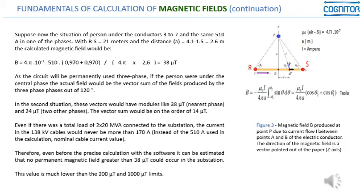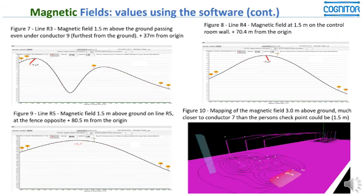Even if there was a total load of 2 times 20 MVA connected to the station, the current in the 138 kV cables would never be more than 170 amps. You see, we are doing the calculations with 510 amps, three times more, so we are calculating values which are much higher than the actual fields.